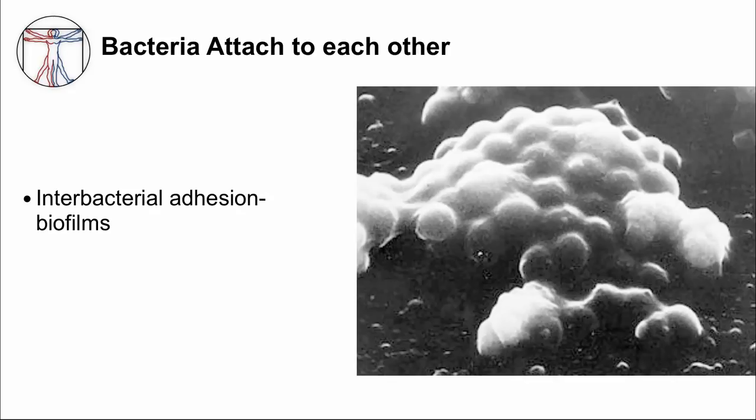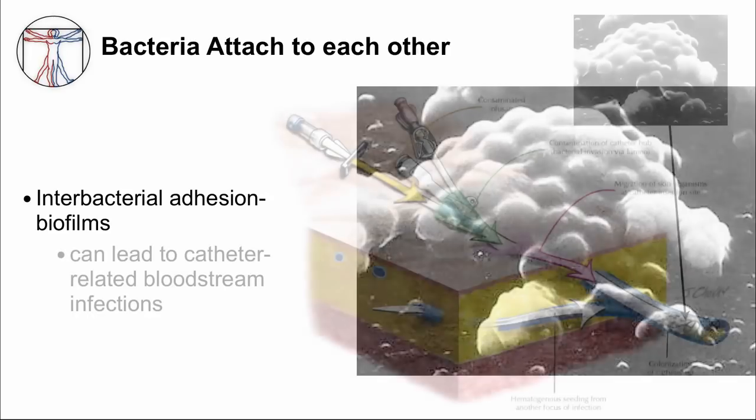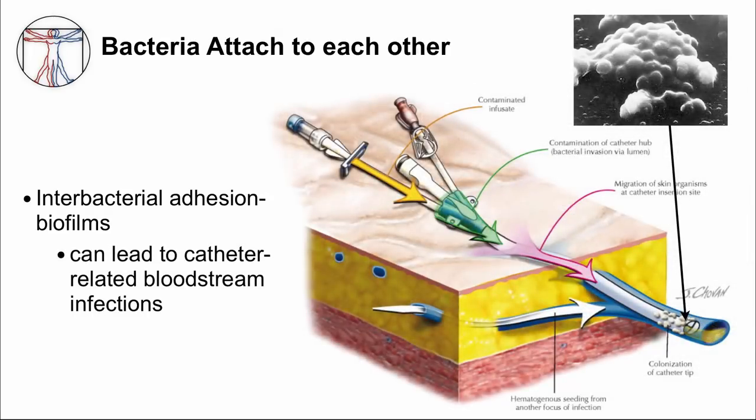Biofilms can grow on catheters and prosthetic devices, as you can see in this image. Biofilms allow bacteria to hide from the immune system and from antibiotics, making these infections hard to treat, and many times requiring removal of the device.